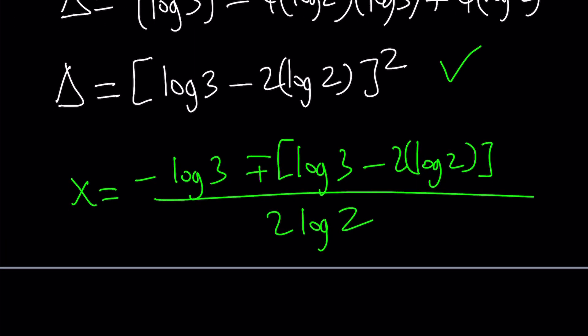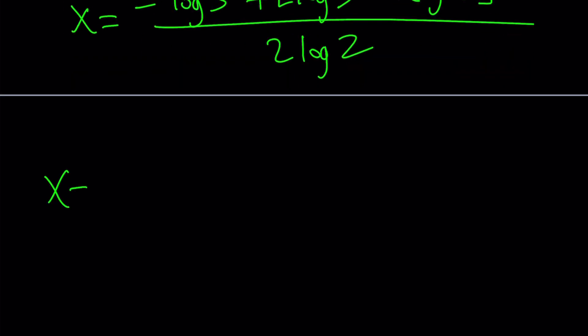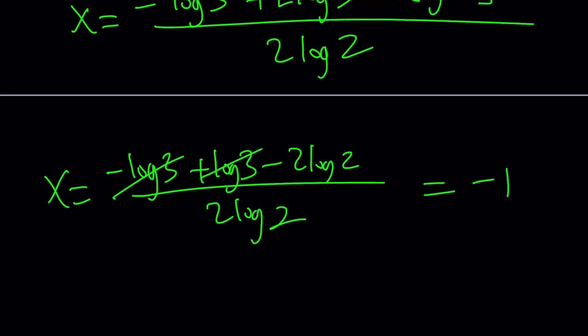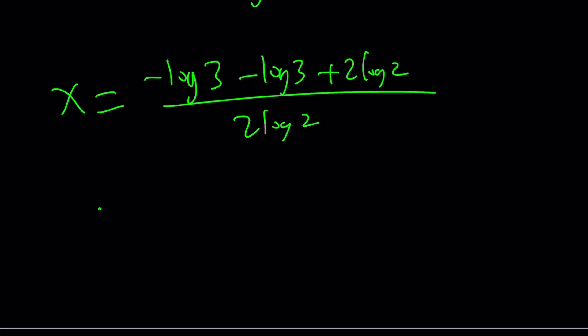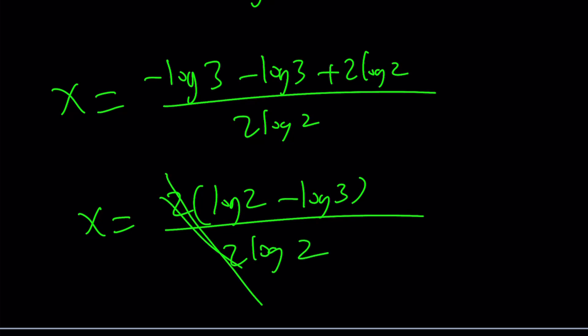The rest is fairly easy. All we have to do is split it up and find the answers. Negative log 3 plus log 3 minus 2 log 2 divided by 2 log 2. This is going to be negative 1. As you can see, the other root is going to be negative log 3 minus log 3 plus 2 log 2 divided by 2 log 2. 2 times log 2 minus log 3 divided by 2 log 2. 2 cancels out and we end up with the other answer as log 2 minus log 3 divided by log 2.